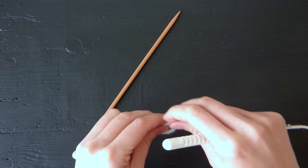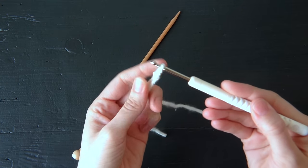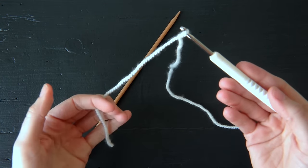Begin with a slipknot on your crochet hook. Make sure it's not too tight. You don't need much of a tail here.